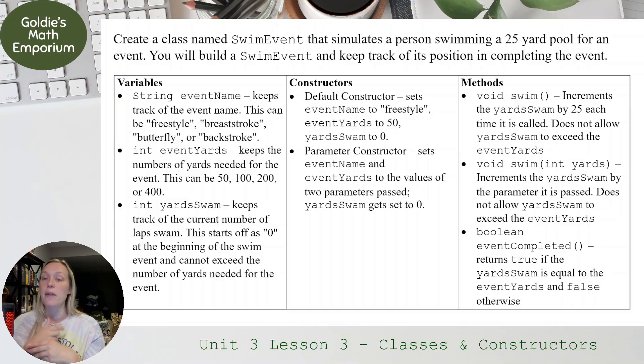And then the last method is called eventCompleted that returns true if yardsSwim is equal to eventYards and false otherwise. So this is the entire class that we are going to have to code. If you want to pause this video and try it on your own, feel free to do that. You can write it out. I'm going to have my class write it out on paper. The AP exam is going to have you use Blue Book online. So you can type this out digitally. Just know that when you are working online and on the AP exam, you're not going to have an IDE. So you're not going to have anything that automatically tabs, automatically adds anything into your code to help you, or turns red if something looks off.